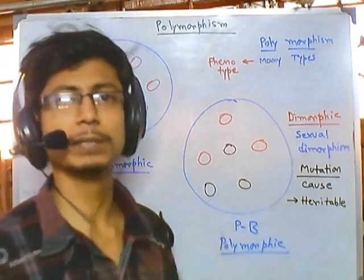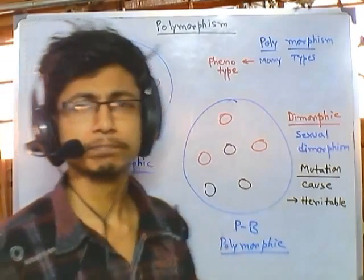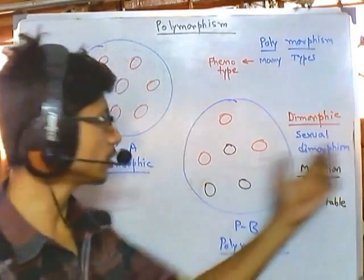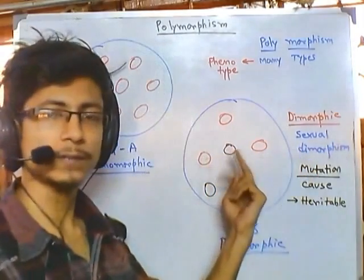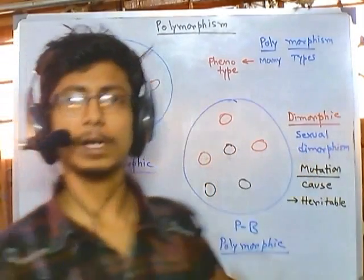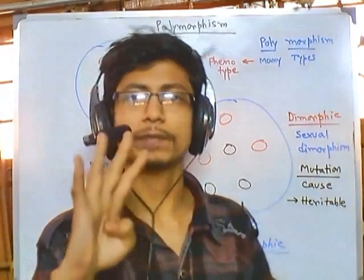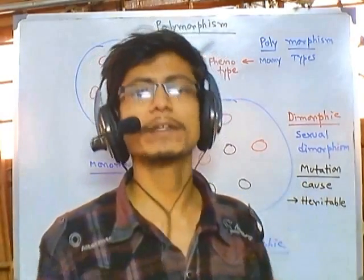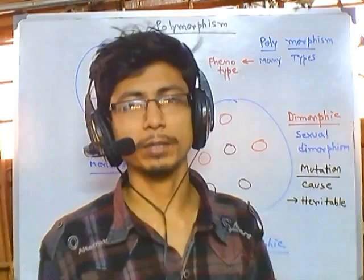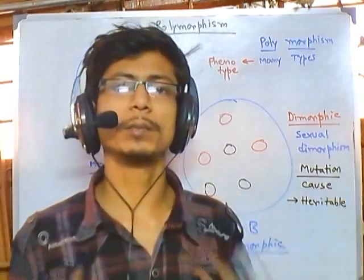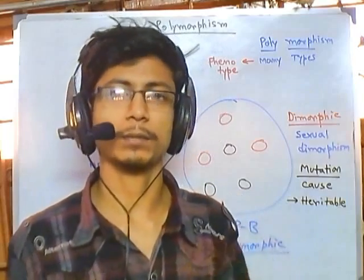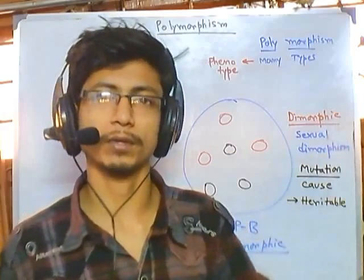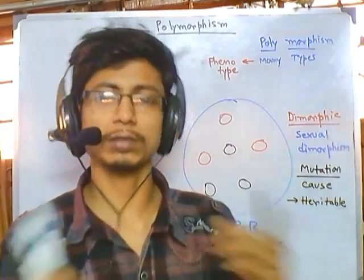For example, a genetic polymorphism example is the blood grouping of human beings. In the case of sexual dimorphism, we have only two morphs, but in the case of human blood groups, we have four different morphs: A, B, AB, and O. Another example is the beta globin gene of our body, which shows a very long kind of polymorphism throughout the population.